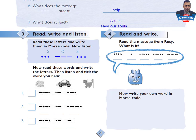Now let's listen to this message. S, O, S. Now read these words, write the letters, then listen and tick the word you hear. You can use the code and search for the letter. Take your time to do this activity, then come back to check your answer.